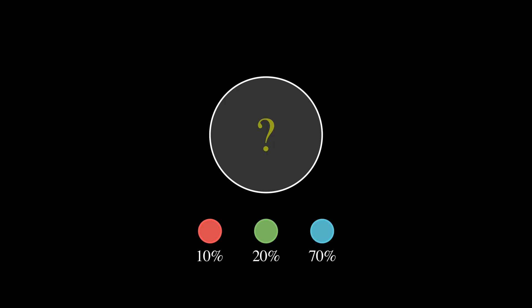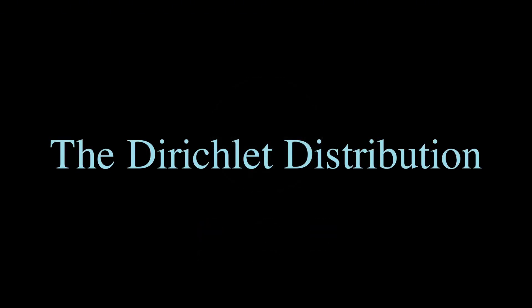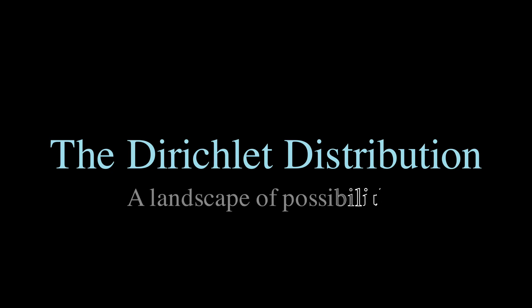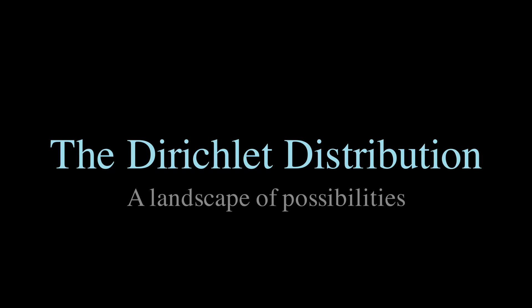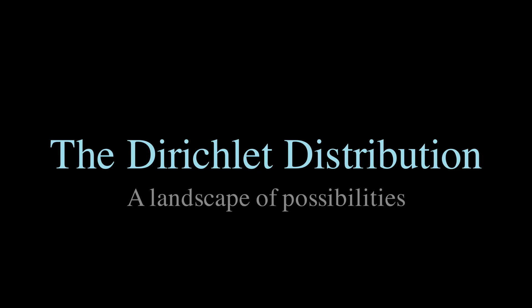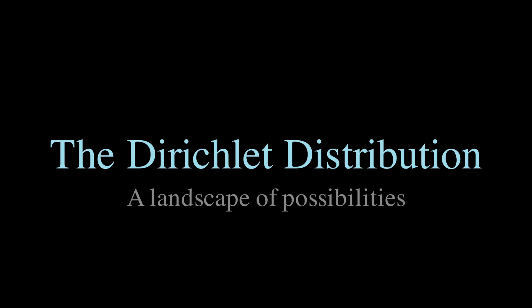The thing is, there are countless possible combinations, and each combination is itself a set of probabilities that must sum to one. This is exactly the kind of problem the Dirichlet distribution was designed to solve, giving us not just one answer, but a whole landscape of possibilities, where some combinations are more likely than others based on what we've observed so far.